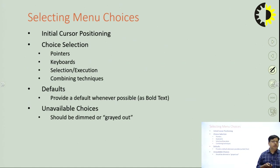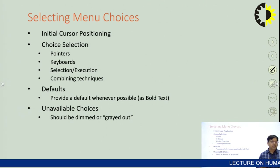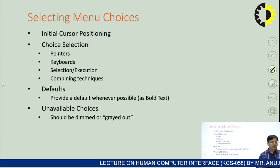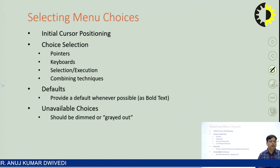For selecting menu choices, you should initially place the cursor on the particular choice. Choices may be selected through a pointer, through the keyboard, through selection execution, or by combining multiple techniques. Provide defaults whenever possible shown as bold text. Accelerators like Ctrl+V and Ctrl+C must be common across all applications and web-based environments. Available choices must be grayed out so the user knows they are not allowed to perform certain actions listed in the menu.